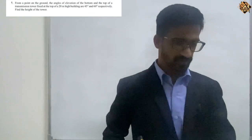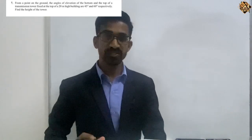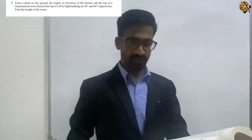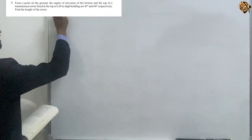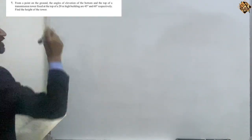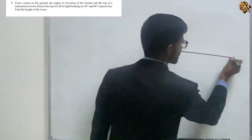Hi students, now let's look at question number seven of page number 204. From a point on the ground, the angles of elevation of the bottom and top of a transmission tower fixed at the top of a 20 meter high building are 45 degrees and 60 degrees respectively. Find the height of the tower.